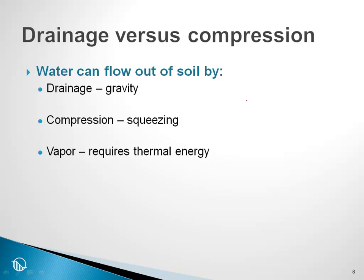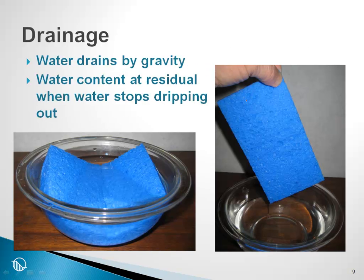A few words about drainage and what we mean by it, since we use the word drainage a lot in a SeepW analysis. SeepW can also be used to simulate the dissipation of excess pore pressure, as in a consolidation analysis. If you were to take a sponge, soak it until completely saturated, and then hold it up by a corner, water would drip out. That drainage is occurring purely due to gravitational forces — no pressure is being applied to the sponge.